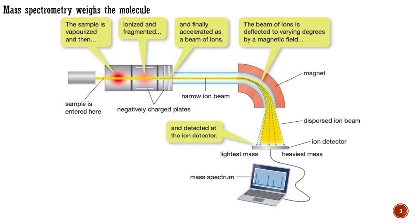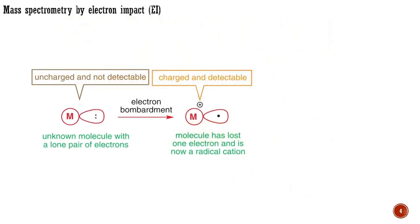All spectrometers in common use operate in a high vacuum and use one of several methods to convert neutral molecules into cations — the most common being electron impact, chemical ionization, and electrospray. In electron impact mass spectrometry, the molecule is bombarded with highly energetic electrons that knock a weakly bound electron out of the molecule. Losing a single electron leaves behind an unpaired electron and a positive charge. The electron lost will typically be one not involved in bonding, for example an electron from a lone pair. These unstable species are known as radical cations.